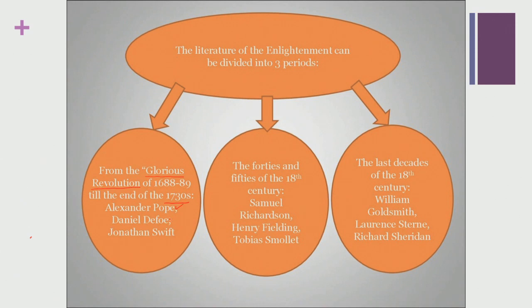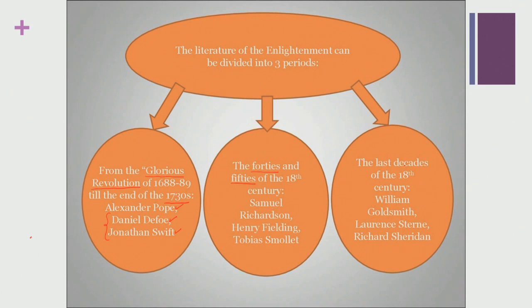We had taken a look at the works of Alexander Pope, Daniel Defoe, and Jonathan Swift. We also noticed how these writers primarily had laid the foundations of a new kind of writing which was to become the most dominant genre in the coming decades. In the second phase of this enlightenment literature of the long 18th century, literature was primarily produced in the 40s and 50s of the 18th century.